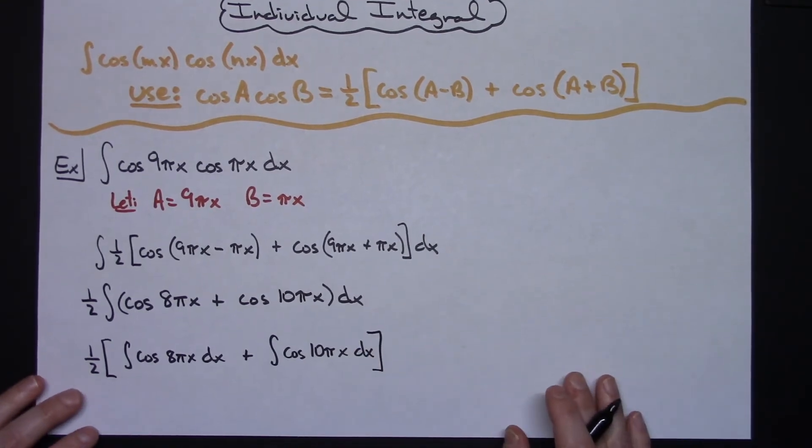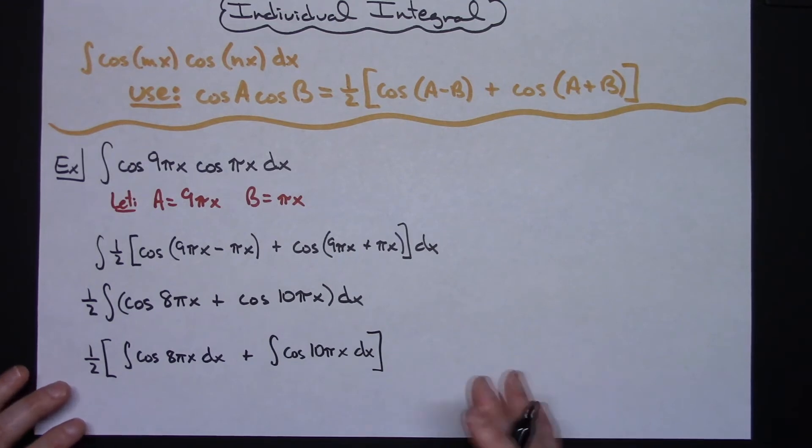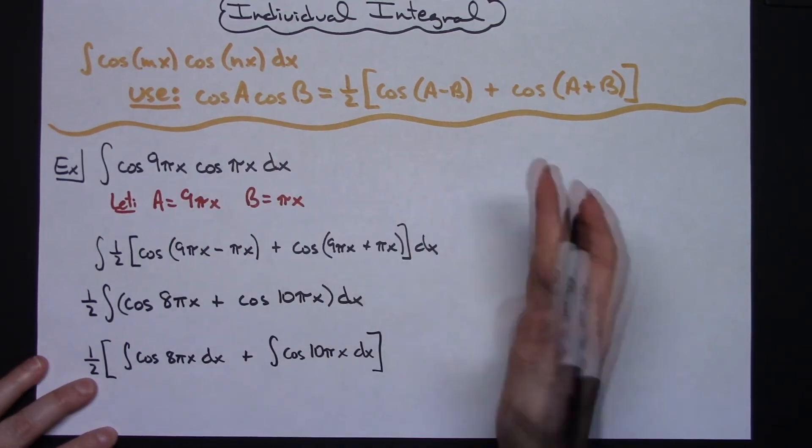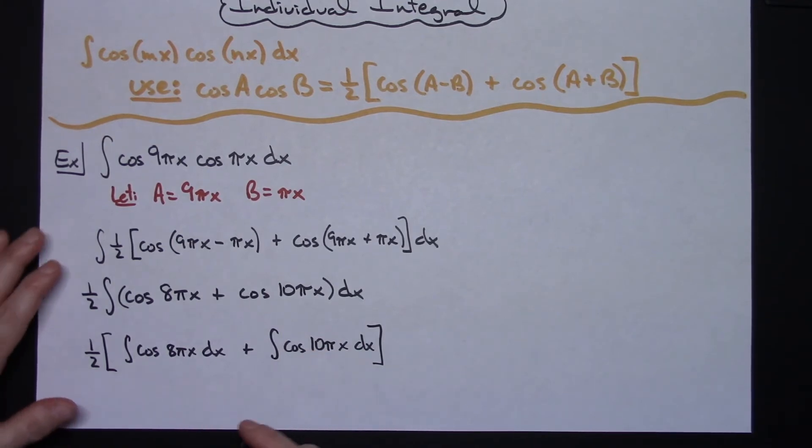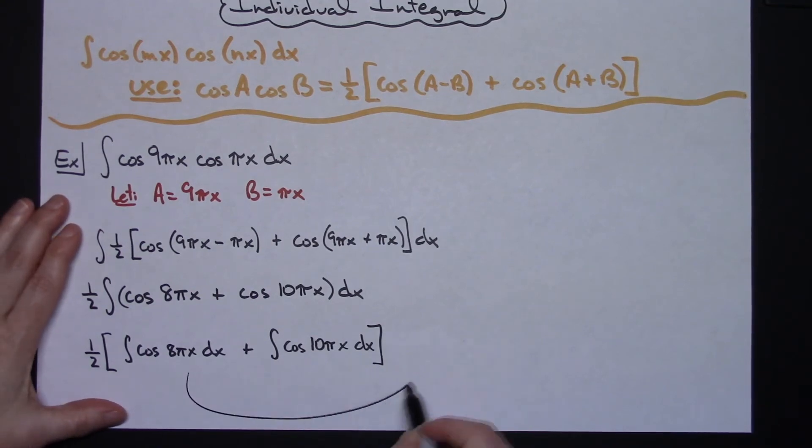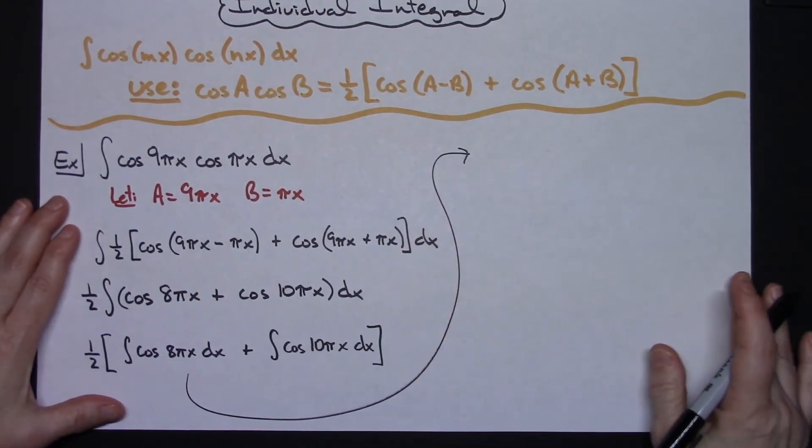Hopefully at this point, if you're doing a trig integral using this type of substitution, then these two are going to be very basic U substitutions. You're going to end up pulling out a 1 over 8π on this one, and you're going to pull out a 1 over 10π on the other, so hopefully we can do that without actually showing the U substitution in this video.